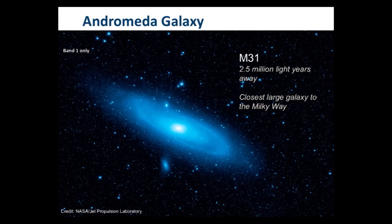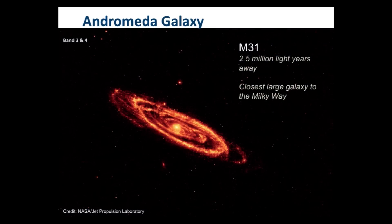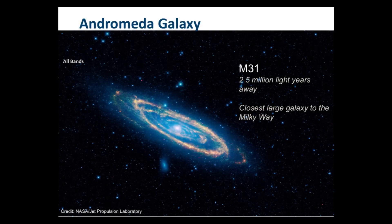This is the band closer to what we would see with our eyes. In the cooler bands, the longer wavelengths, we can see these cloud-like structures. And here we see the composite image of Andromeda, our nearest neighbor.